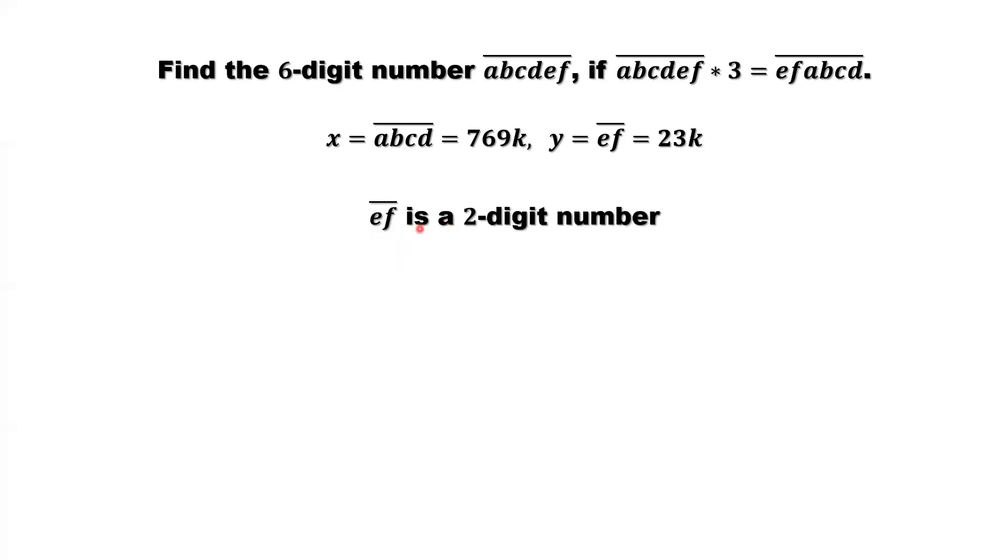We want to find what is the range for this positive integer K. Because ef is a 2-digit number. So here, K can be 1. 1 times 23, 2-digit. 2 times 23, 2-digit. 3 times 23, that's still 2-digit. 4 times 23 is 2-digit. If K equals 5, that's 115. This is 3-digit. So here, K only can be 1, 2, 3, or 4.